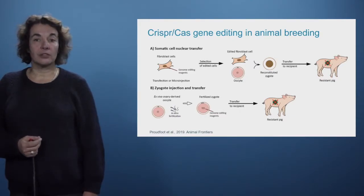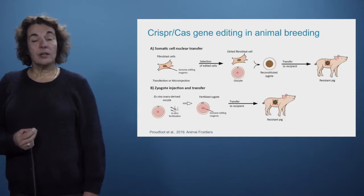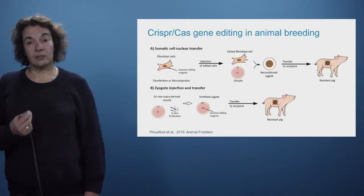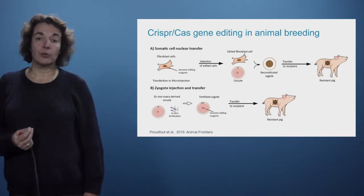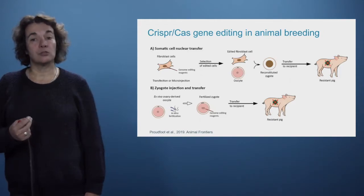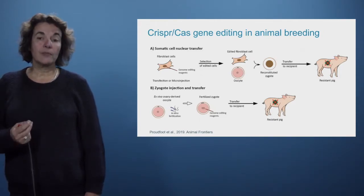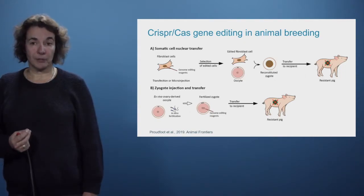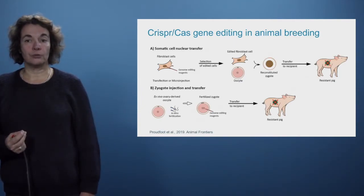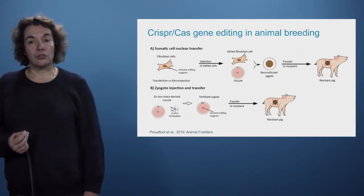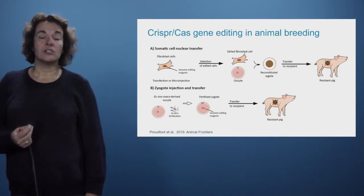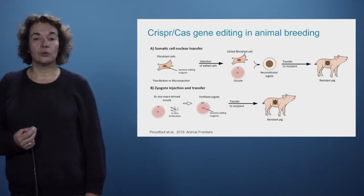The first technique is somatic cell nuclear transfer. You will take a fibroblast cell and add the gene editing reagents to it. Then you culture the fibroblasts, select the ones in which gene editing is successful, and transfer these fibroblasts to an oocyte from which the nucleus has been removed. You will have a reconstituted zygote that is transferred to a recipient animal, and the offspring will be a gene-edited animal resistant to the disease.